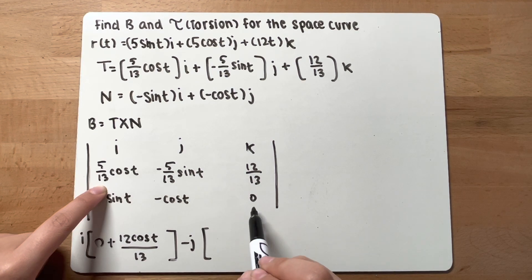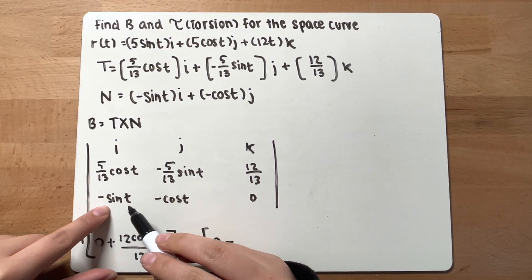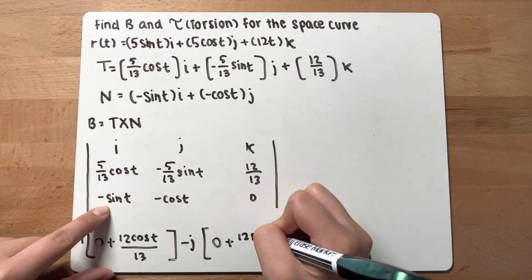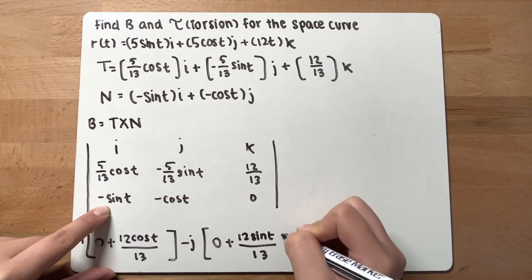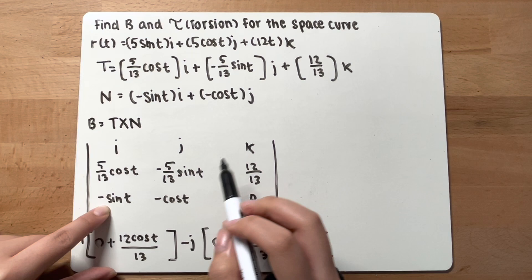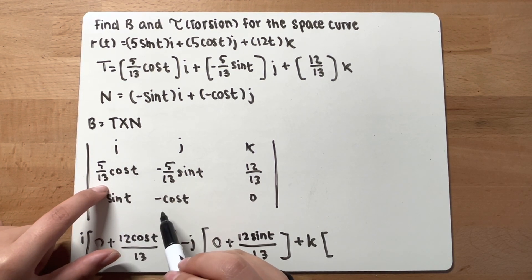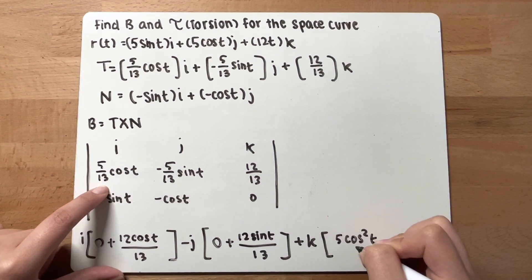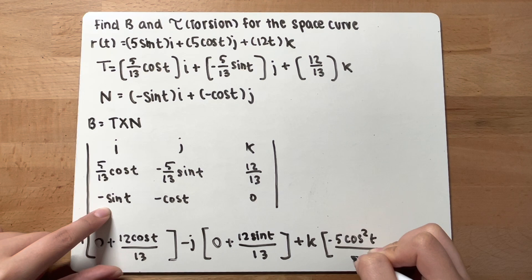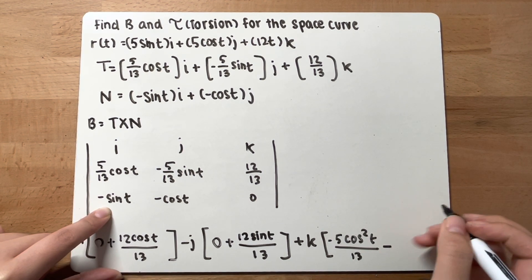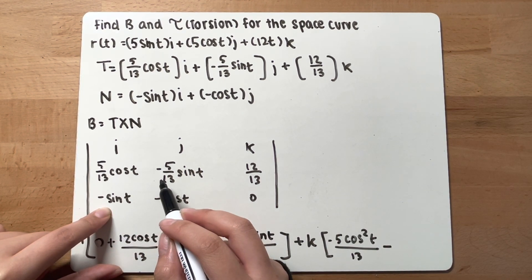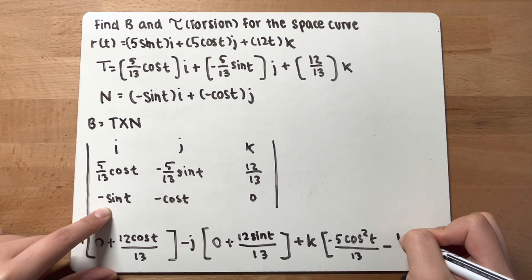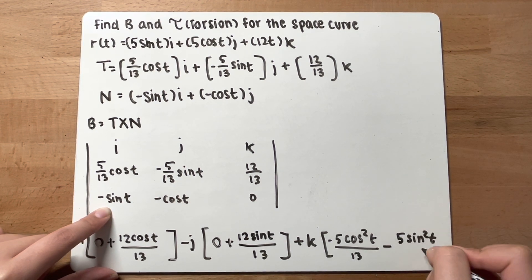To find j, you do 5 over 13 cosine t times 0, which is 0, minus negative sine t times 12 over 13, which is positive 12 sine t over 13. Now for k, you do 5 over 13 cosine t times negative cosine t, which gives negative 5 cosine squared t over 13, minus negative sine t times negative 5 over 13 sine t, which gives positive 5 sine squared t over 13.